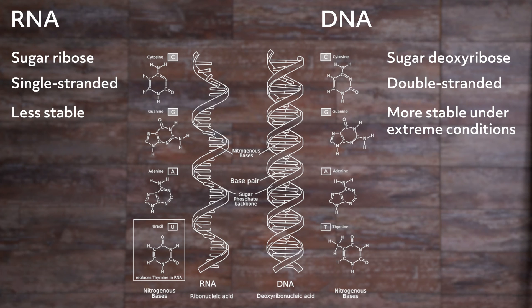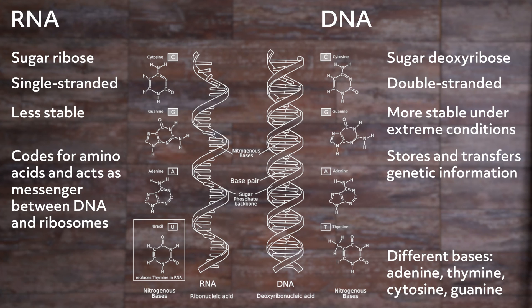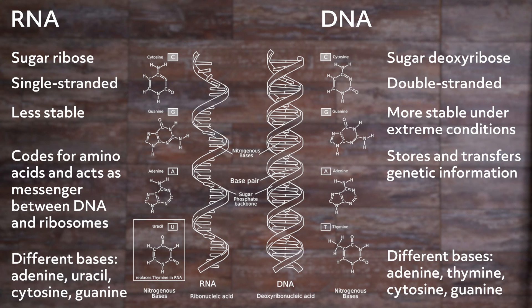DNA and RNA perform different functions in humans. DNA is responsible for storing and transferring genetic information, while RNA directly codes for amino acids and acts as a messenger between DNA and ribosomes to make proteins. DNA and RNA base pairing is slightly different, since DNA uses the bases adenine, thymine, cytosine, and guanine, while RNA uses adenine, uracil, cytosine, and guanine. Uracil differs from thymine in that it lacks a methyl group on its ring.